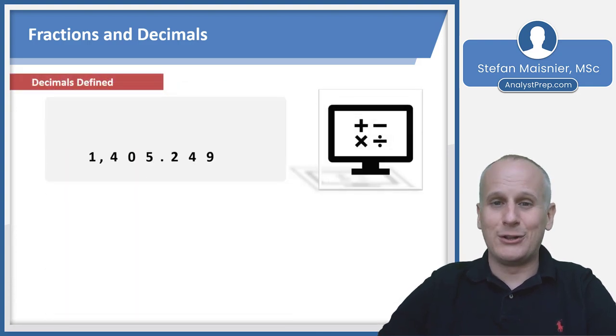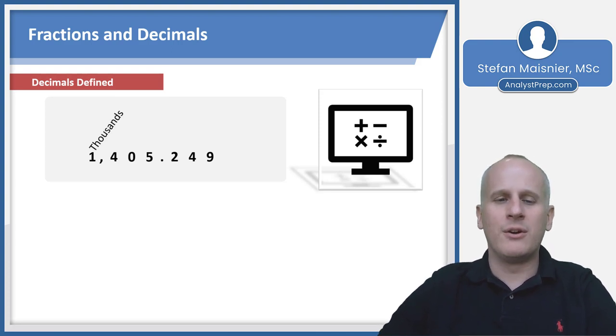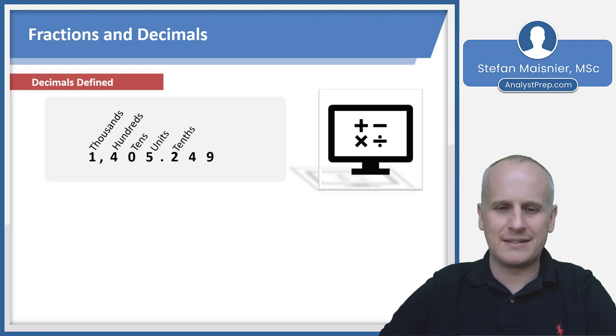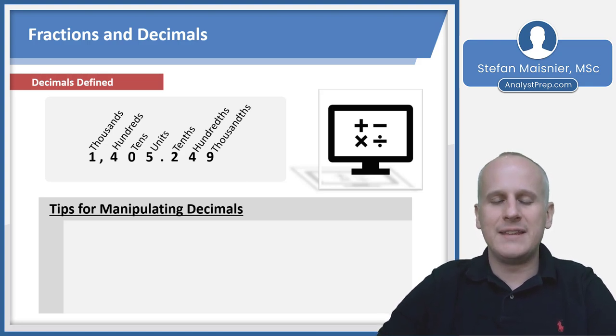Now, decimals. Let's look at a big number: 1,405.249. The one is the thousands, four is hundreds, zero is tens, five is units. After the decimal point, we have two tenths, four hundredths, and nine thousandths. You could write this out as 1,000 plus 400 plus 0 plus 5, then two over 10 plus four over 100 plus nine over 1,000.